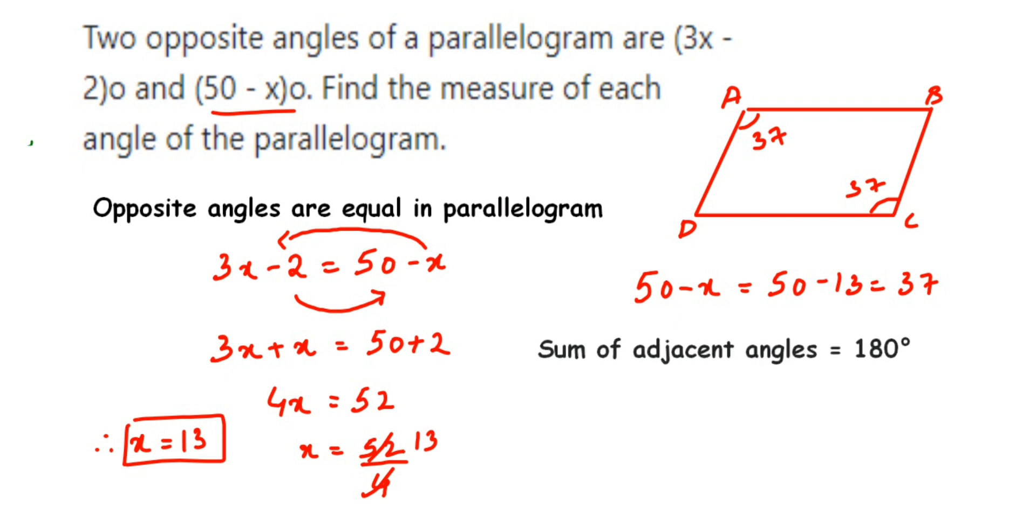You might have learned that the sum of adjacent angles in a parallelogram equals 180°. If you add any two adjacent angles, the sum should be 180°. I know angle A is 37°, so angle A + angle D = 180°.